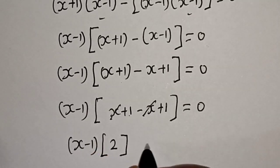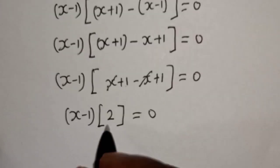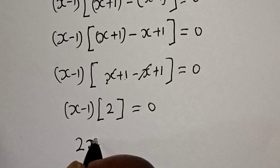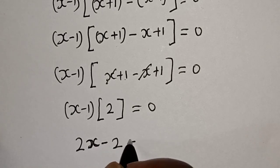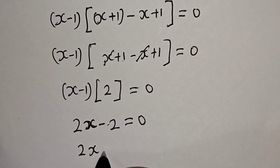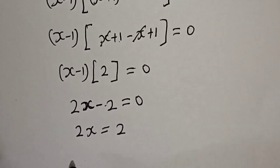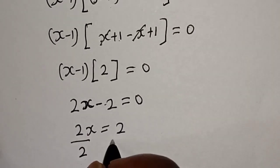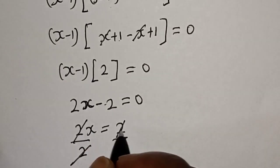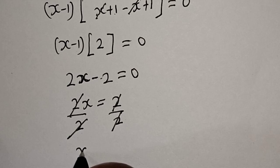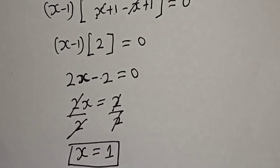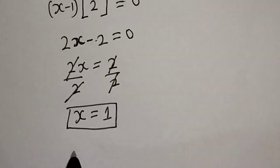If you multiply out with these two, we have 2x minus 2 is equal to 0. Let's bring this to this side: 2x is equal to 2. Divide by 2, divided by 2. This one will cancel this. Therefore x is equal to 1, and that is our final answer. We can check to confirm if our answer is right or wrong.